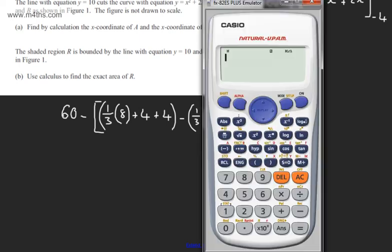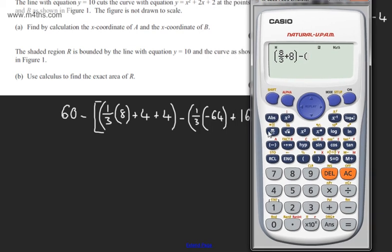So if we take a calculator I'm going to look at this part first. And this is going to be 8 over 3. Then we're going to have now plus the 8. And then we're going to subtract away from that the minus 64 over 3.